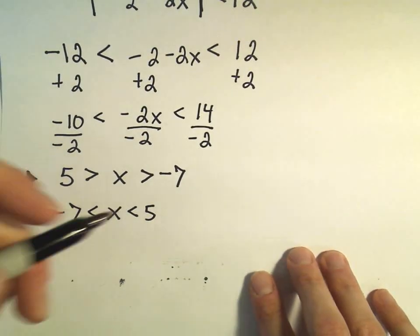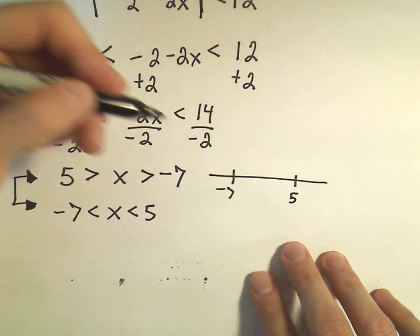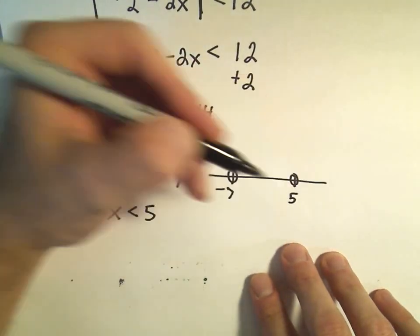And again, if you wanted to write this in interval notation or to see a graph, it says here's negative 7, here's 5. Neither of those works, so we use an open circle.